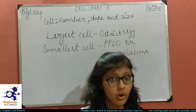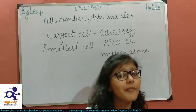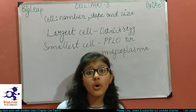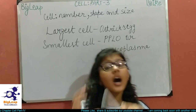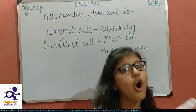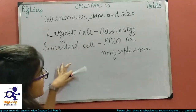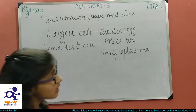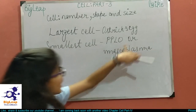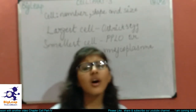An egg is a single cell. So if you ask what is the largest cell in the world, the answer is the largest egg. The largest egg is the ostrich egg, so the largest cell is the ostrich egg. The smallest cell discovered till today is mycoplasma, also called PPLO.